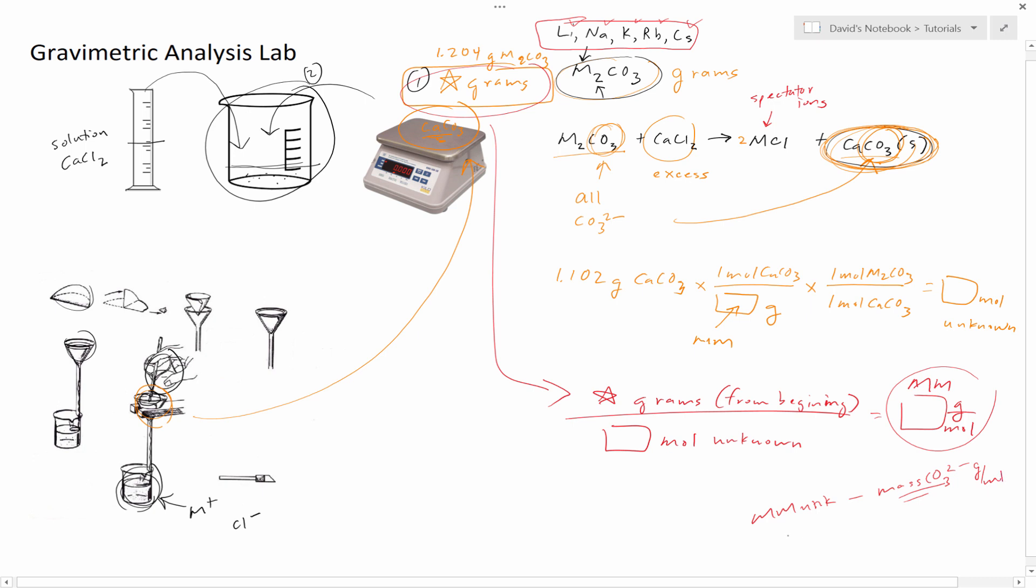And then if you divide by two, this should give you the mass of the unknown metal, or the molar mass, sorry, grams per mole of the metal ion.